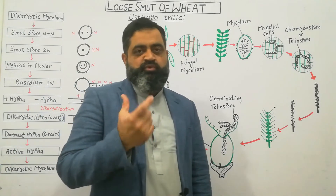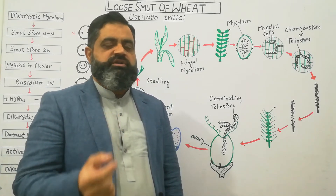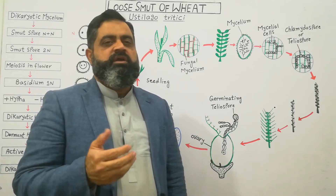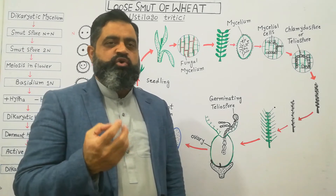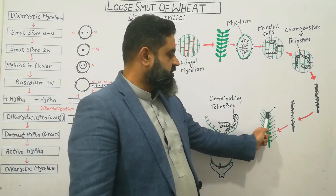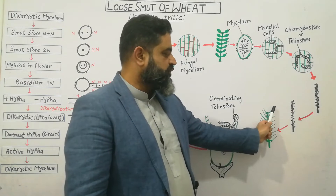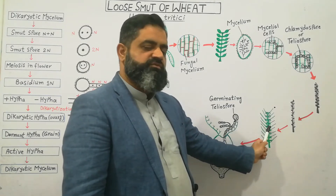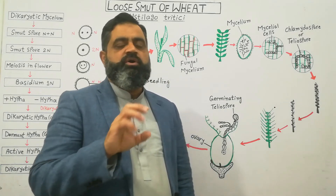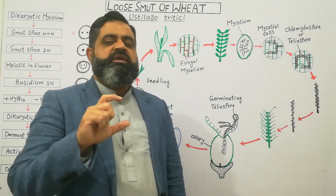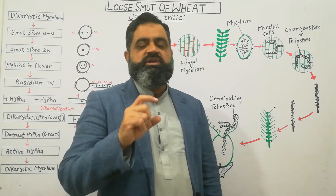Somehow a spore of this smut fungus, Ustilago tritici, is brought by wind or air onto the surface of these flowers. This is a spore which is going to fall on the surface of the flower, but the farmer does not know about this spore that has infected his wheat crop.